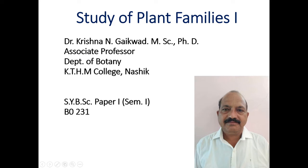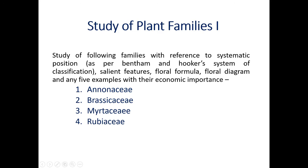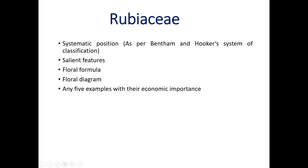Department of Botany, KDJM College Nasik. We are studying here second year Botany, paper ODSBO 231. We have completed three families: Anoniaceae, Brassicaceae, and Miliaceae. In this topic we have to study the fourth family as per our syllabus — Family Rubiaceae — with reference to systematic position as per Bentham and Hooker's System of Classification, salient features, floral formula, floral diagram, and any five examples with their economic importance.